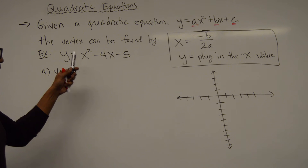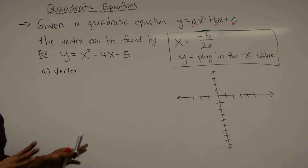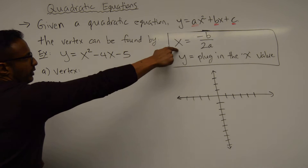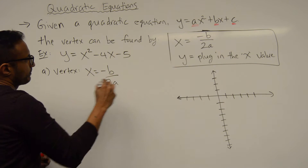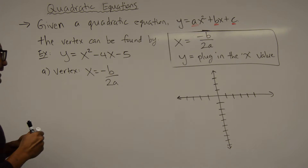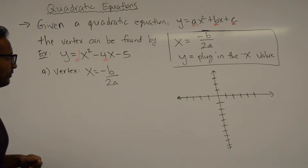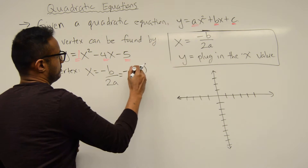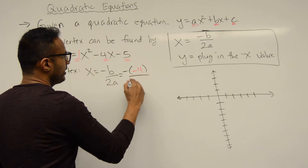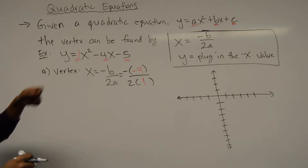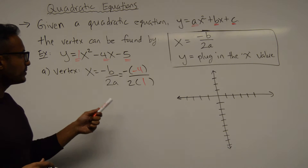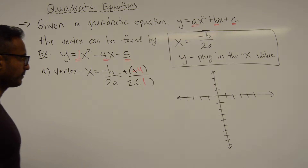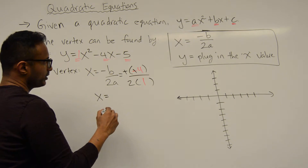Let's look at our example: y = x² - 4x - 5. Part a says find the vertex. We're going to use the formula x = -b/2a. Here a is the coefficient of x², b is the coefficient of x. So we have negative b, that's negative negative 4, divided by 2a which is 2 times 1. We get two negatives, so they become positive.